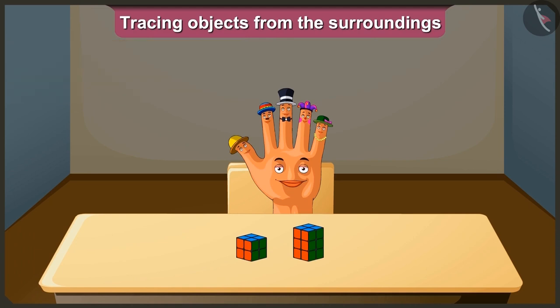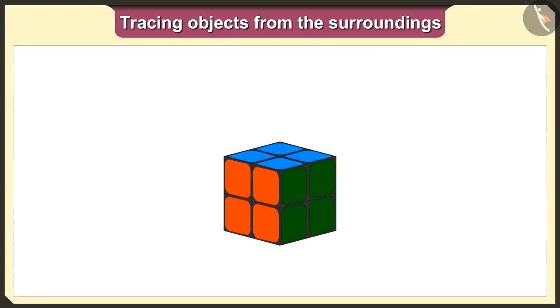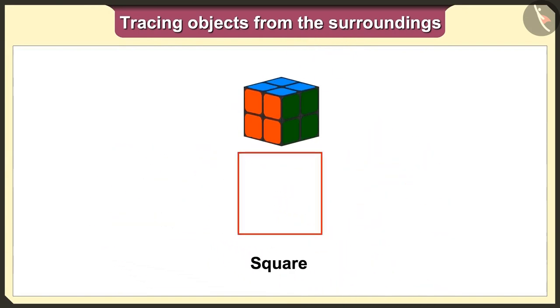Let's keep these toys on a paper and trace them. If we keep this cube toy on paper and trace it, then we will get a square shape like this.